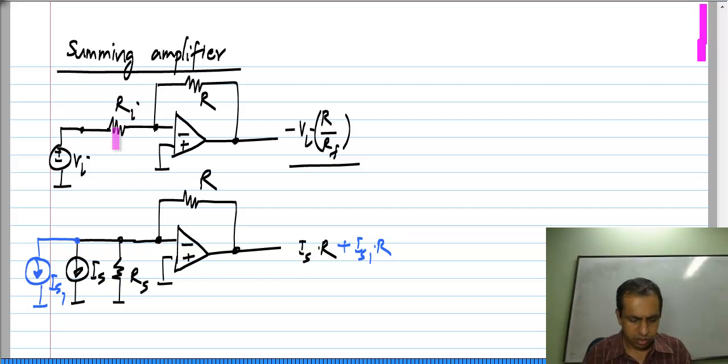So similarly, by having more of these branches, voltage sources in series with resistances, we can sum currents.